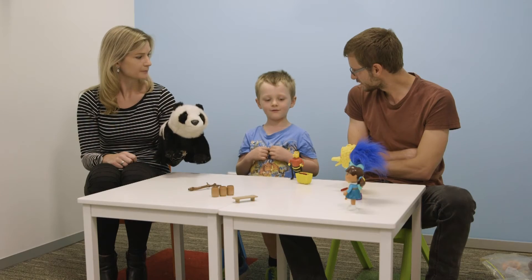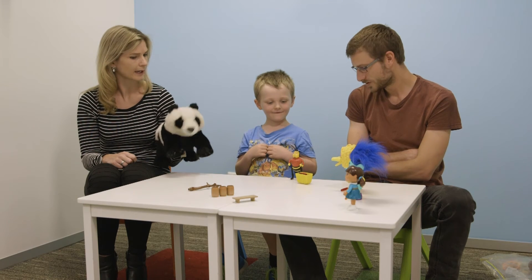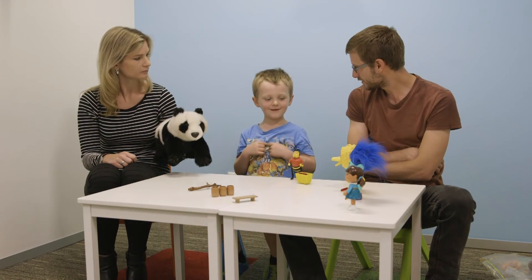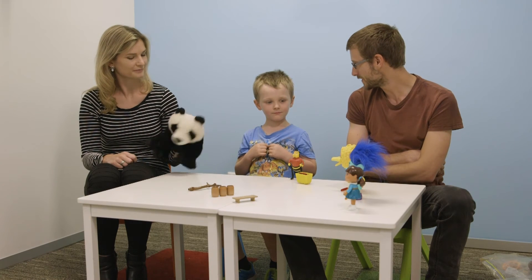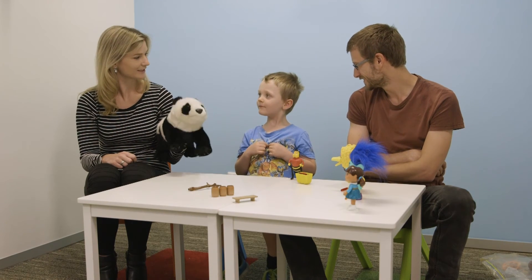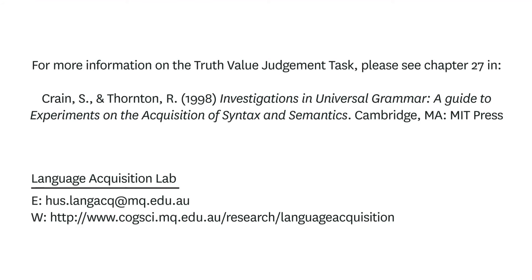The child's reason for rejecting the puppet statement is important evidence that the child understood the story and rejected it for the right reason. The child should mention the actual outcome — that Buzz said Big Bird was the best jumper. The child confirms: 'Buzz said Big Bird is the best jumper.' This illustrates how the Truth Value Judgment Task can be used to assess children's knowledge of linguistic principles — a task that has been used to investigate many different principles in many languages.